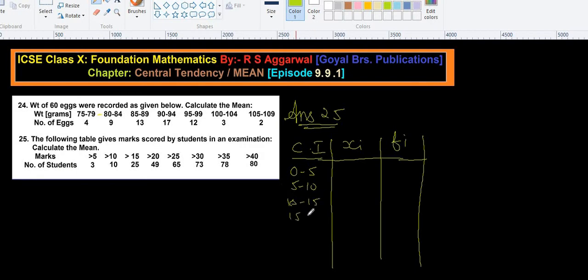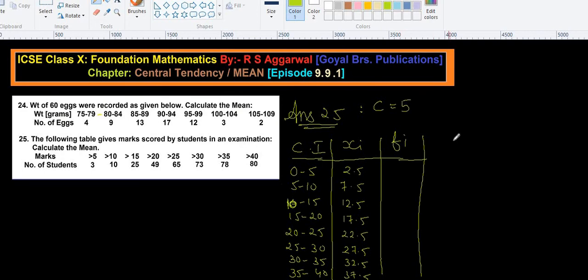Okay, here 0 to 5, 5 to 10, 10 to 15, 15 to 20, 20 to 25, 25 to 30, 30 to 35, and 35 to 40. Xi means class marks. 0 plus 5 divide by 2, that is 2.5, 7.5, 12.5, 17.5, 22.5, 27.5, 32.5, and 37.5. We know class marks, so difference between them will give us class length, that is 5, because I am going to use step deviation method.